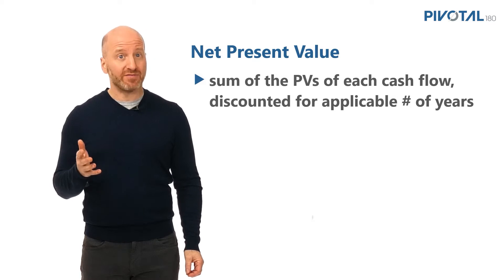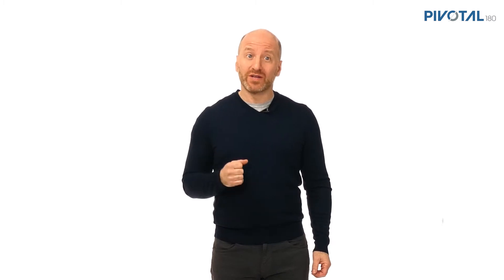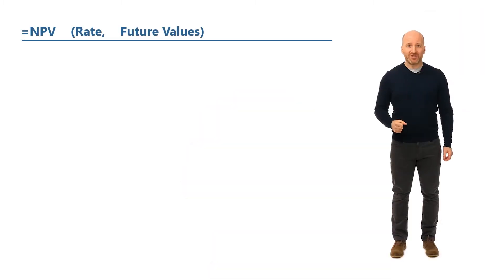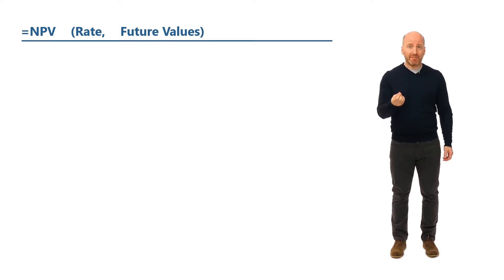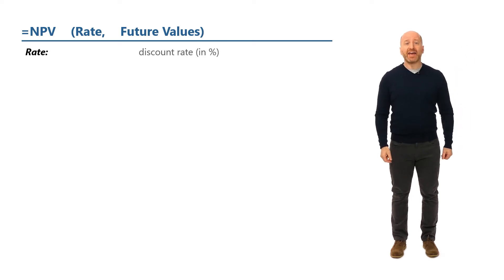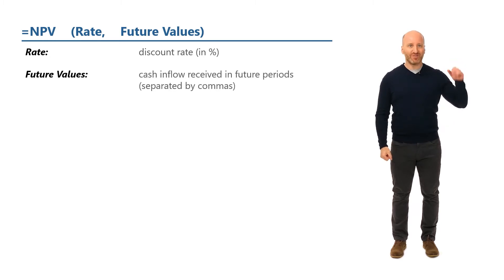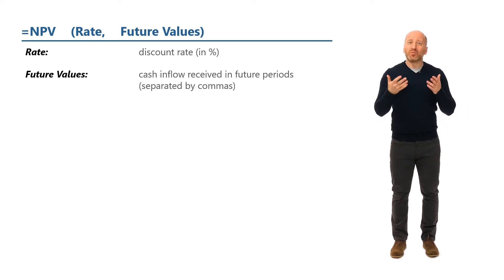That function is called NPV, for net present value. To enter the function into Excel, you type equals NPV and open parentheses. Inside the parentheses, Excel first asks you to specify the applicable discount rate, followed by a comma, then Excel asks you to indicate all of the cash flows you want to discount, and then you close the function.